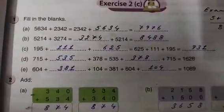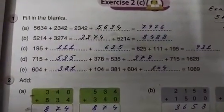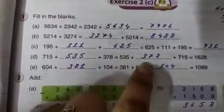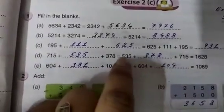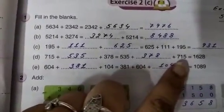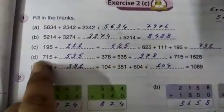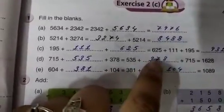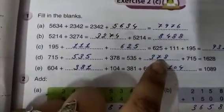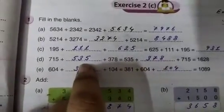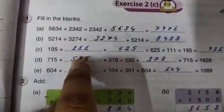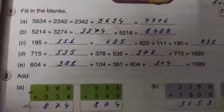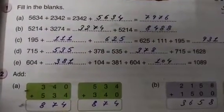Same thing you will get. Next, 715 plus dash plus 378 equal 535 plus dash plus 715. Now, this side 535 and 715 is given. And this side 715 and 378 given. Now, 378 is not given in this side. So, here you will put 378 and 535 is not here. So, in the blank, you will write 535. Next, to check yourself, you can add up and see the answer. See, 1,628 will be your answer.